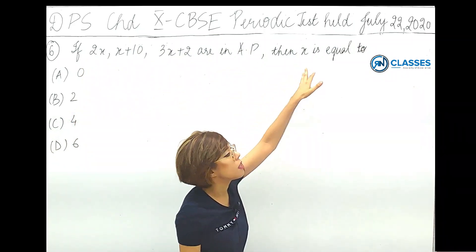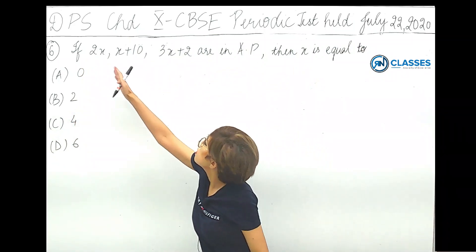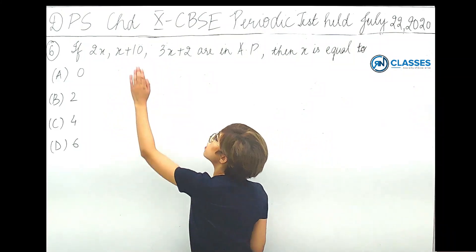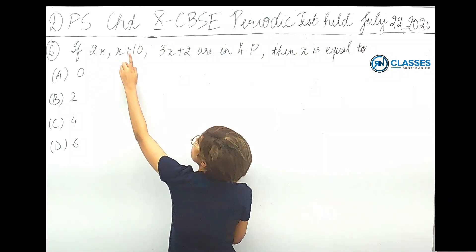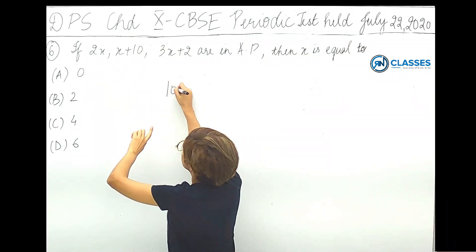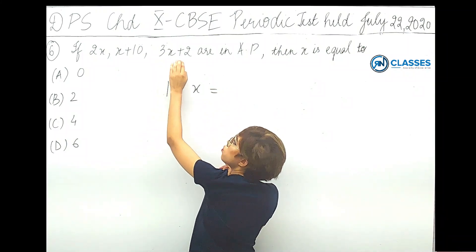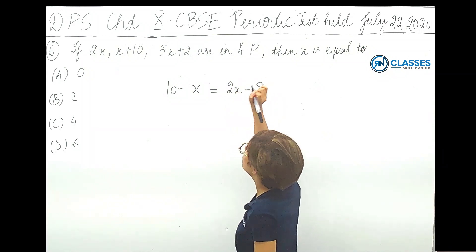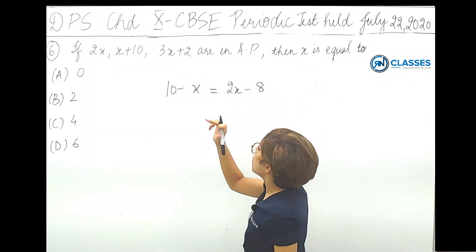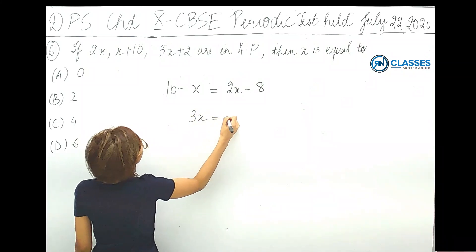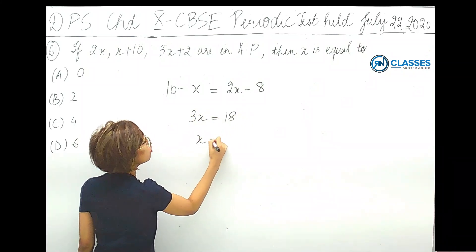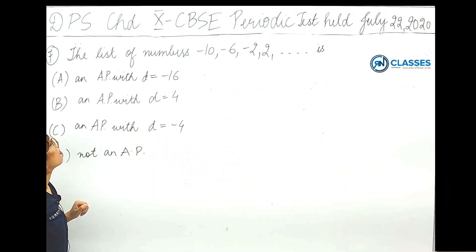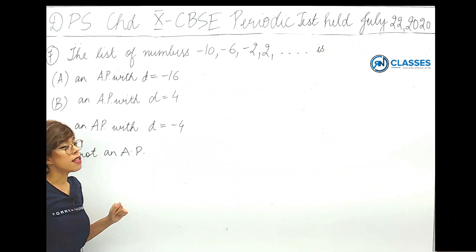The next question: three consecutive terms of an AP are given, so the common difference is the same. Setting c2 minus c1 equal to c3 minus c2: x plus 10 minus 2x equals 3x plus 2 minus x plus 10, giving 10 minus x equals 2x minus 8. Solving: 3x equals 80, so x equals 6. Option D is correct.